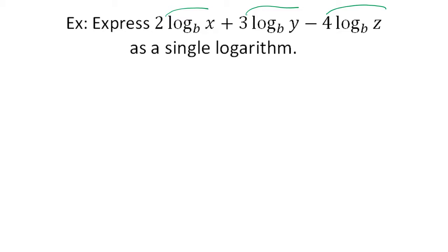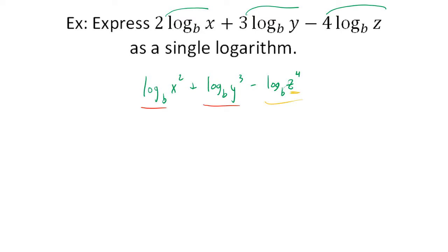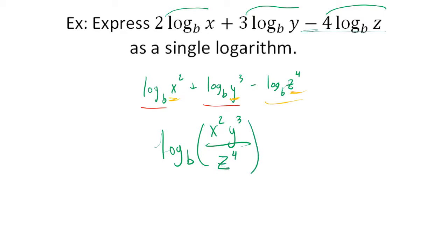Going the other way: given 2·log base b of x plus 3·log base b of y minus 4·log base b of z, first use the power rule to bring the coefficients back up as exponents: log base b of x squared plus log base b of y cubed minus log base b of z to the fourth. The positive terms go in the numerator and the negative term goes in the denominator: log base b of (x squared · y cubed divided by z to the fourth).